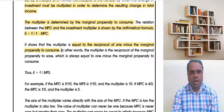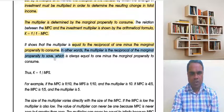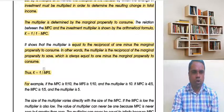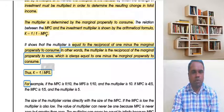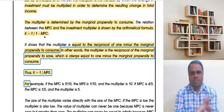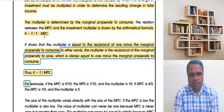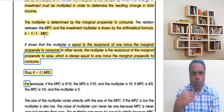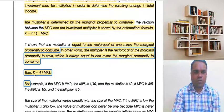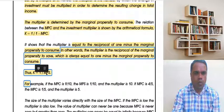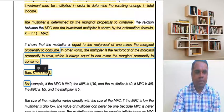In other words, the multiplier is the reciprocal of the Marginal Propensity to Save (MPS), which always equals (1 - MPC). Since MPC + MPS = 1, then 1 - MPC = MPS. Therefore, you get another formula: K = 1 / MPS.